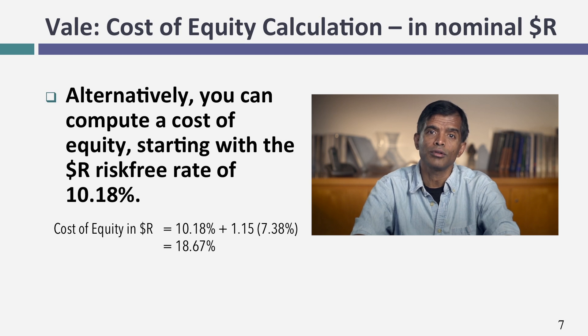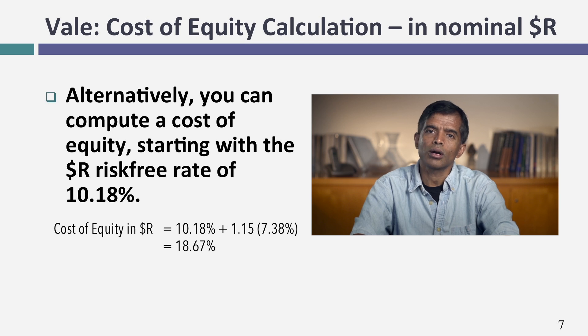I could have done everything in nominal real terms using a nominal real risk-free rate, but I think starting with dollar numbers and adjusting for inflation is actually a better way of estimating a local currency cost of equity or cost of capital, because so many of our risk premiums come from dollar-based markets — the equity risk premiums and CDS spreads all come from dollar-based markets. So especially for a currency with a high inflation rate, my suggestion is to start in U.S. dollars and do this conversion.